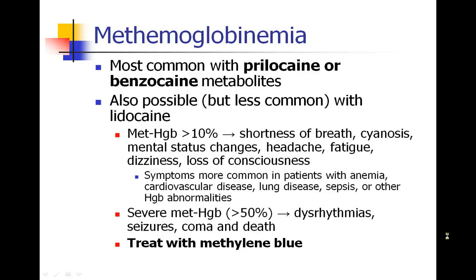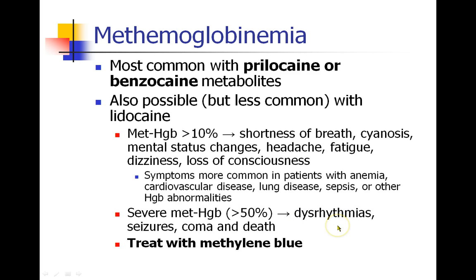Methemoglobinemia is a condition that usually happens with prilocaine or benzocaine, though it could happen with lidocaine and a large number of other drugs. When these drugs are given in high concentrations, they can cause the formation of methemoglobin. When methemoglobin becomes more than 10% of total hemoglobin, patients can have trouble binding oxygen, leading to shortness of breath, cyanosis, mental status change, headache, fatigue, and dizziness. When methemoglobin levels exceed 50%, patients are likely to develop cardiac arrhythmias, seizures, and eventually death. The treatment for methemoglobinemia is methylene blue.